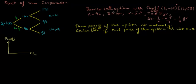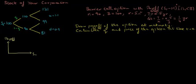We are given a barrier call option on the stock with payoff that's the maximum of the terminal stock price minus the strike price, or 0, times the indicator function, which equals 1 if the terminal stock price is less than the barrier B, or 0 otherwise. The payoff of this call option is just like that of a regular call option, except it will only pay off as long as the terminal stock price is below the barrier. The strike price of this option is 90, the barrier equals 100, the continuously compounded discount rate is 5%, and the time to maturity of the option is 6 months, or 0.5 years.